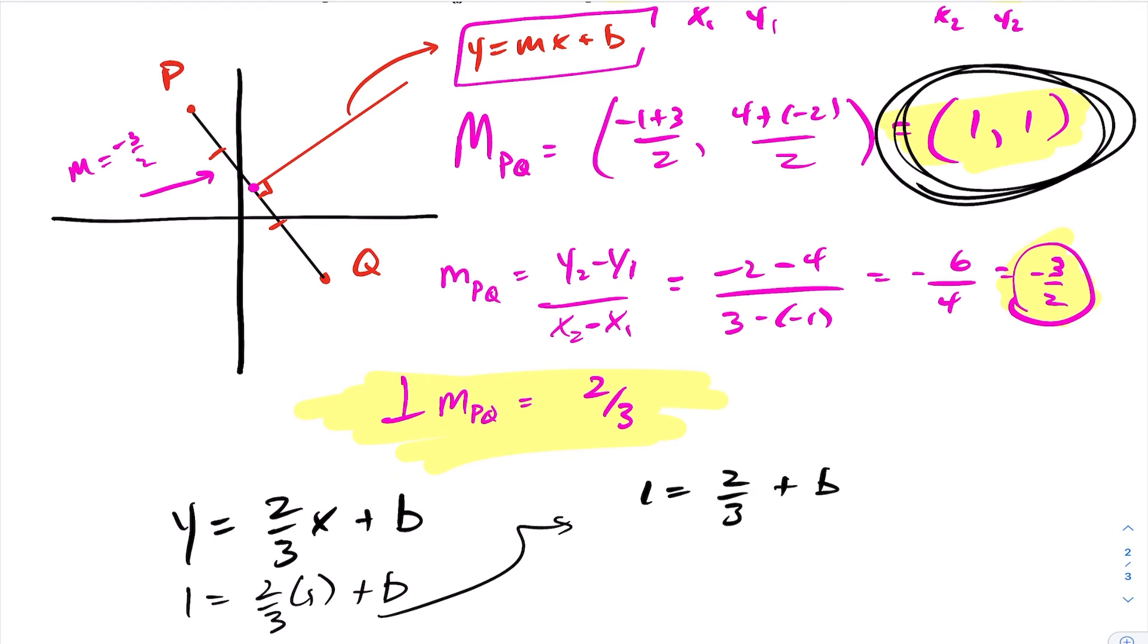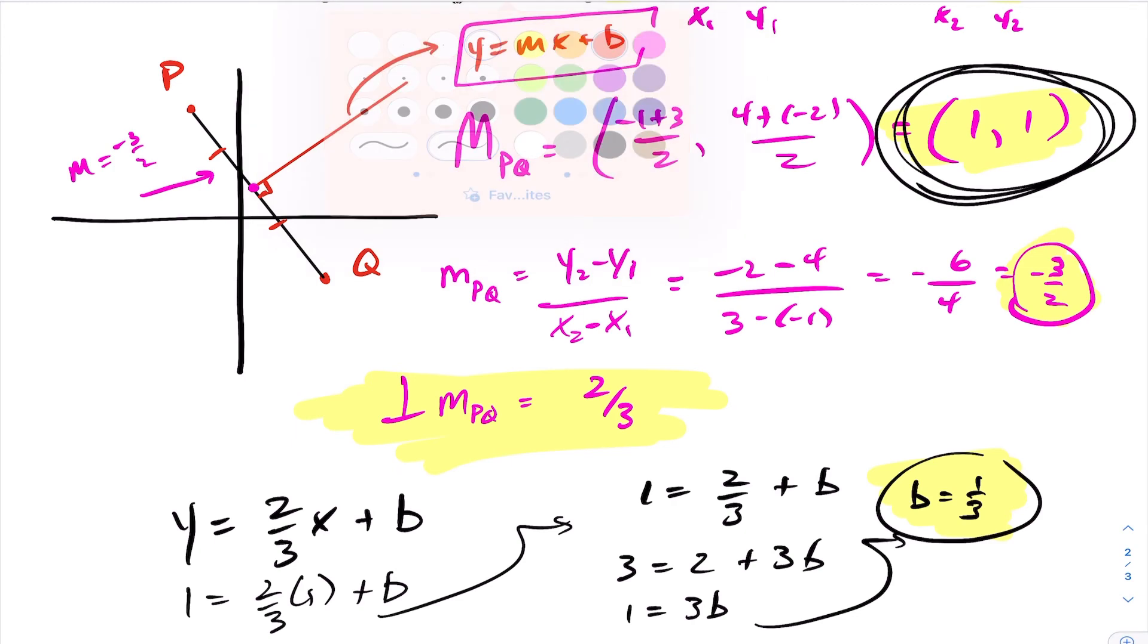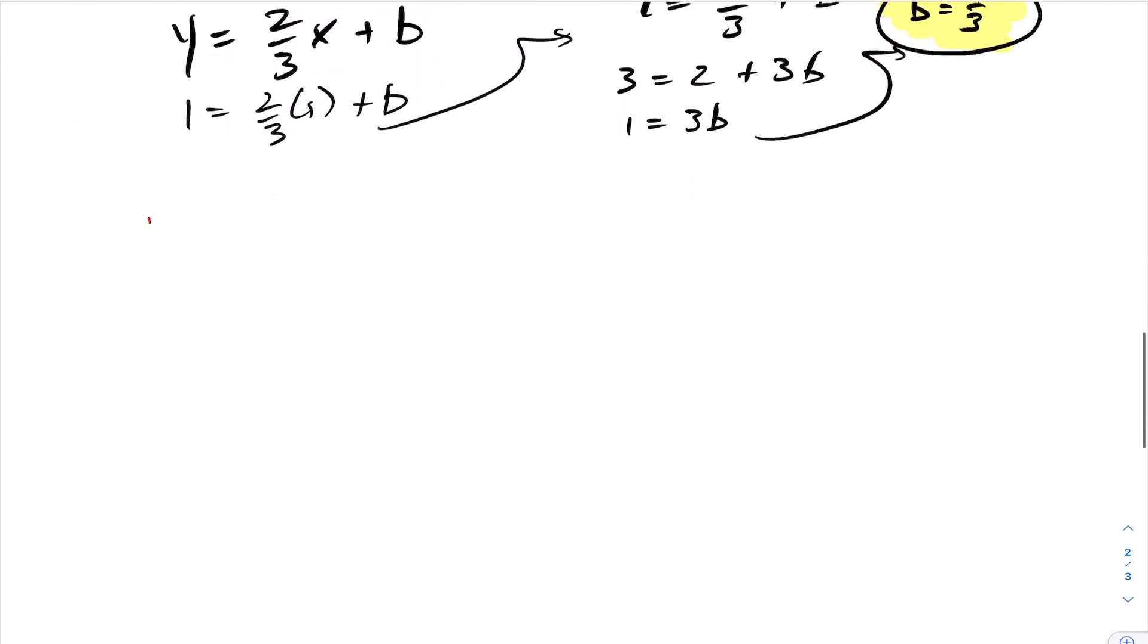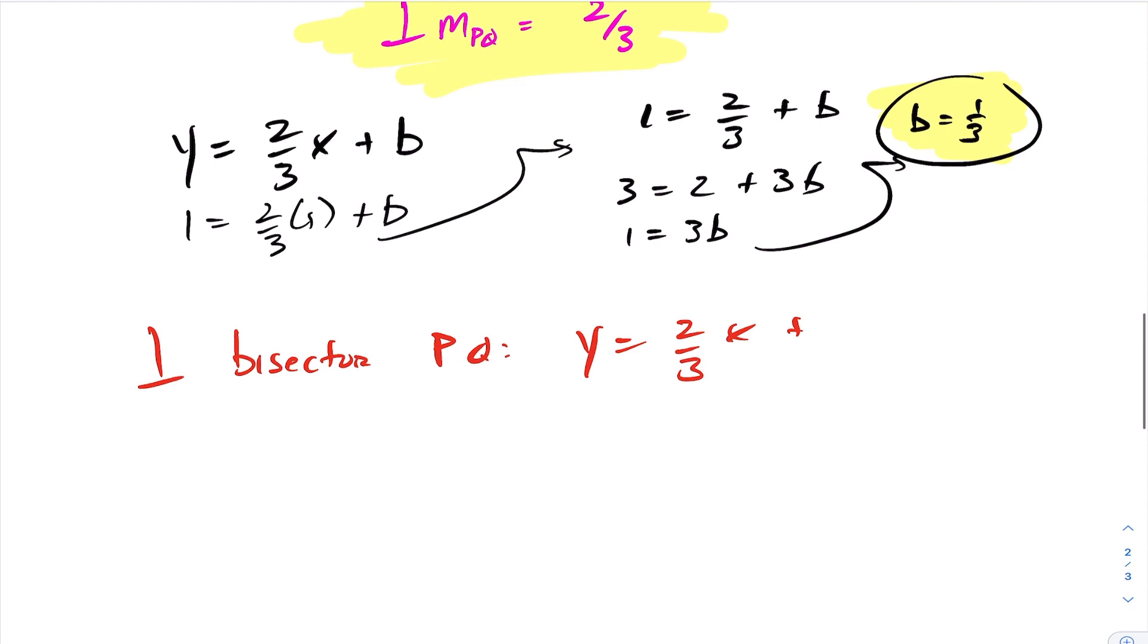And in which case we get 1 equals 2 thirds plus b. Solving for this here, I just multiply across by 3. Subtract off the 2. And then divide out the 3, and you get a third. Okay, so my answer here for this question is the perpendicular bisector of line segment PQ is y equals 2 thirds x plus, what do we find the b value to be? 1 third.